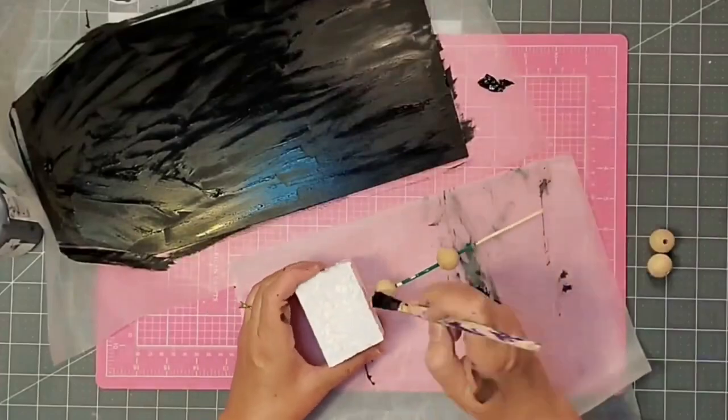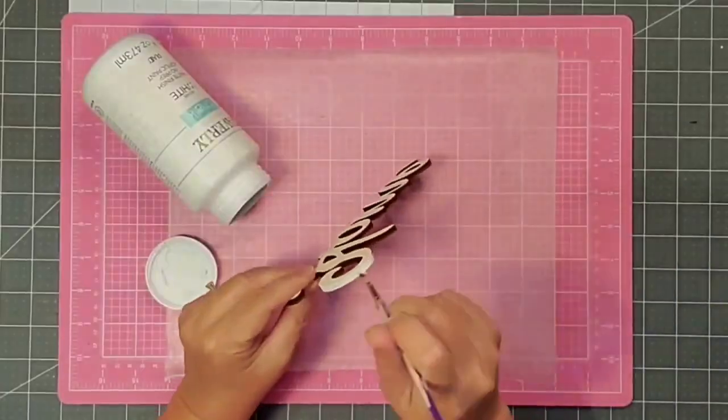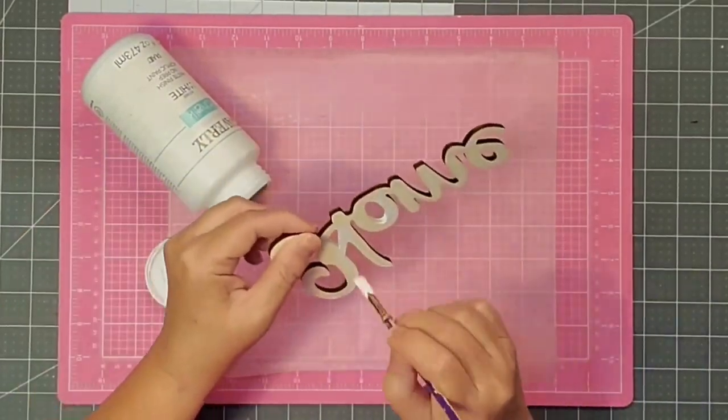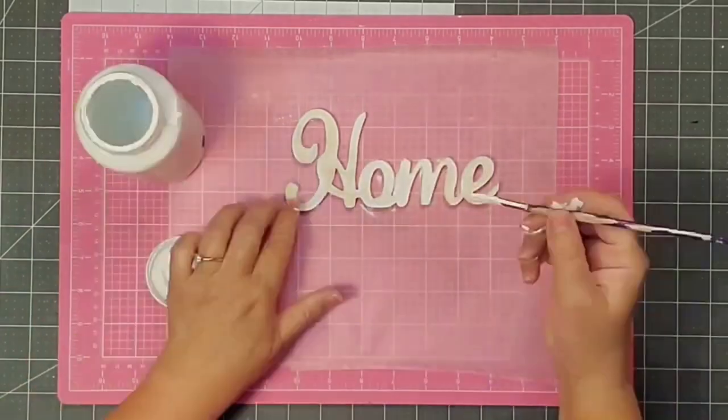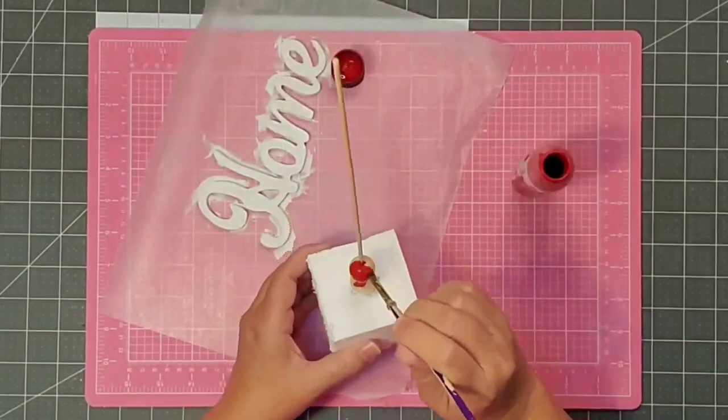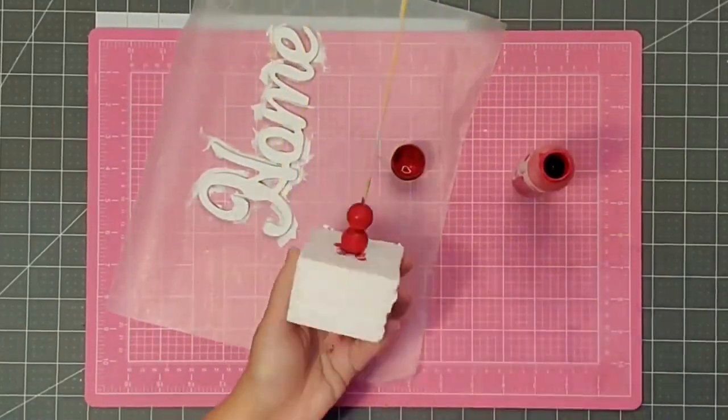I'm going to take two of the wooden beads and string them onto my wooden dowel, and I'm going to paint them in the black chalk paint. I'm going to take the word home, and I'm going to paint it with the white chalk paint. I'm going to paint all of those little nooks and crannies and edges, and of course, the front. And the last of the painting on this project will be painting two of those wooden beads in the red chalk paint.